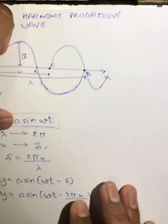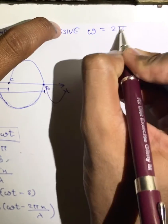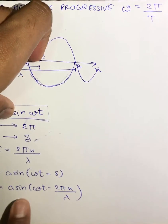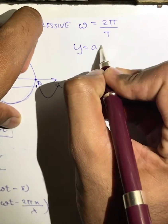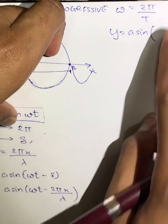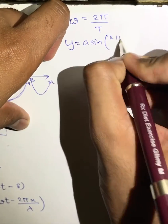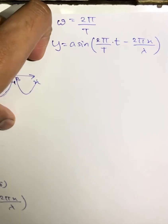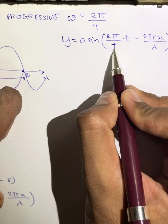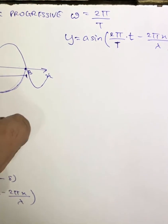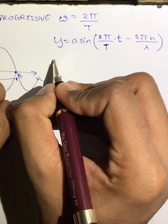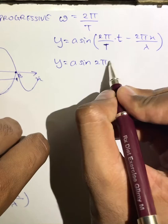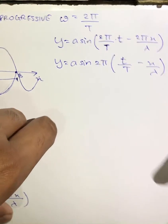We know that ω = 2π/T, so substituting into the equation we get y = a sin(2π/T · t - 2πx/λ). Here T is the time period of the wave and t is the total time considered. Taking 2π common, we get y = a sin 2π(t/T - x/λ). This is the equation which we usually use while solving numericals.